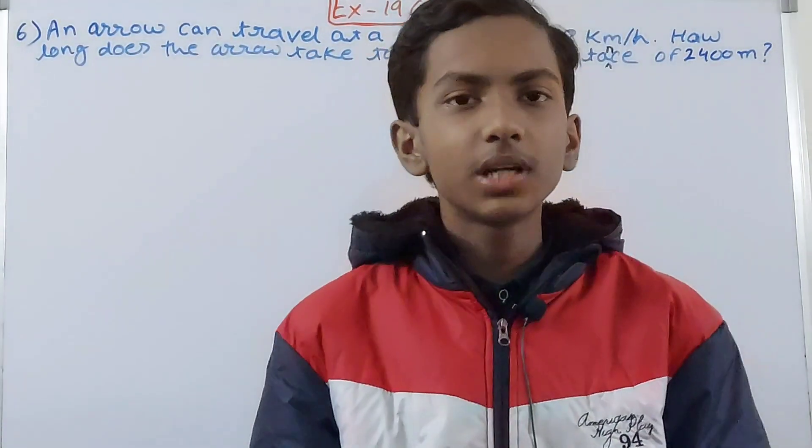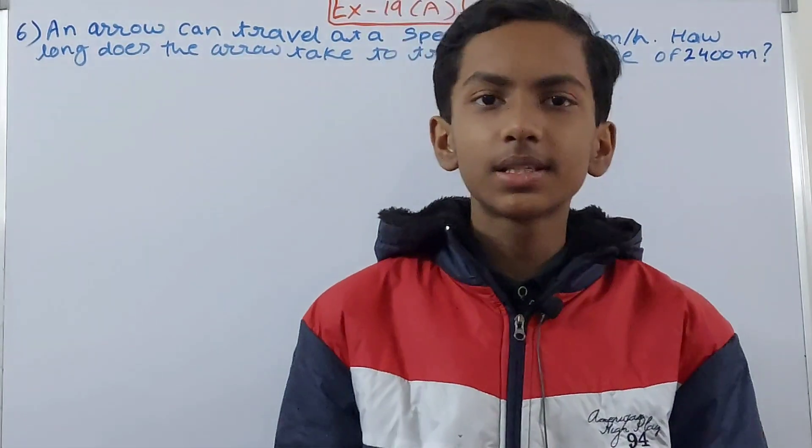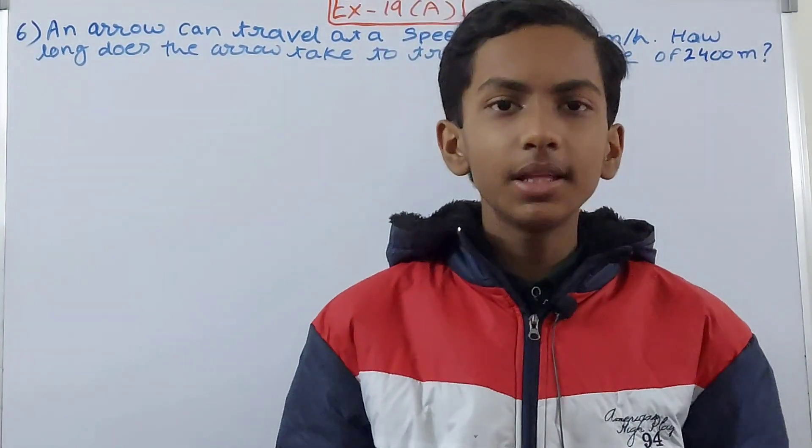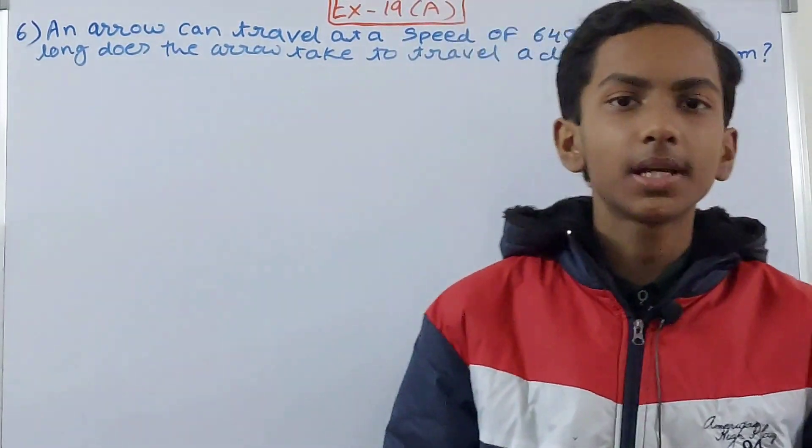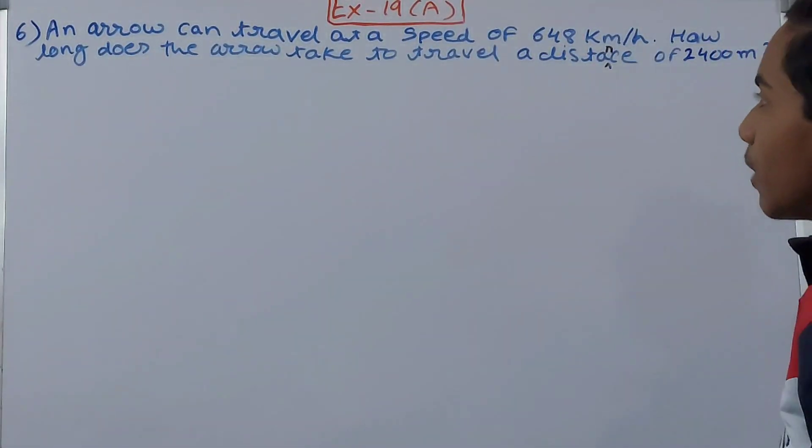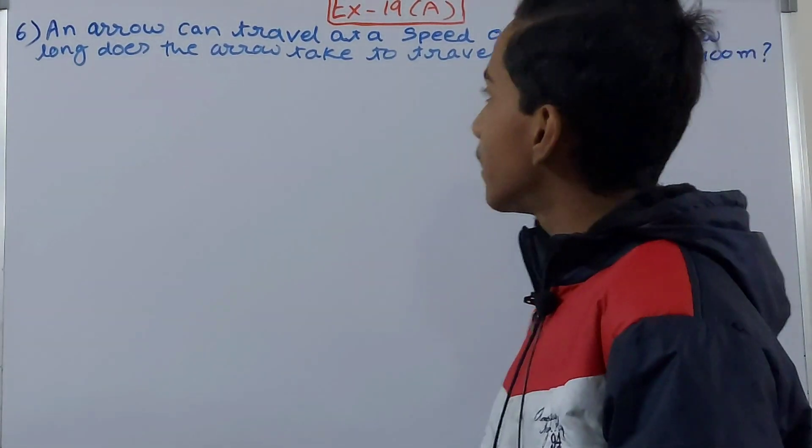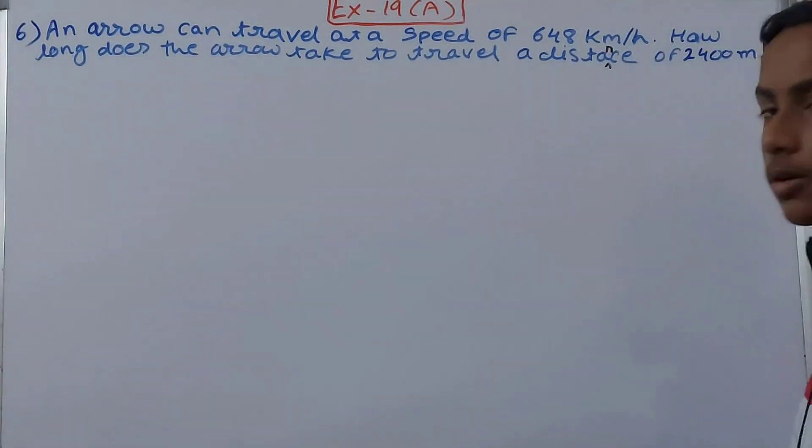Hello friends, welcome back to my YouTube channel Local Learning. In this video we are going to solve ICSE Mathematics Class 7, Chapter 19: Speed, Time and Distance, Exercise 19A, Question Number 6. The problem states: An arrow can travel at a speed of 648 kilometers per hour. How long does the arrow take to travel a distance of 2400 meters?